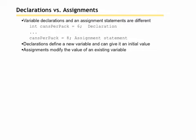Declarations versus assignments. Variable declarations and an assignment statement are different. So when we say int cansPerPack equals 6, we are declaring that variable and providing an initial value. When we say cansPerPack equals 8, that's an assignment statement. So cansPerPack must be already declared and any value that was in that location will be wiped out and replaced with the 8. Declarations define a new variable and give it an initial value. Assignments modify the value that has already been created, the variable that has already been created.